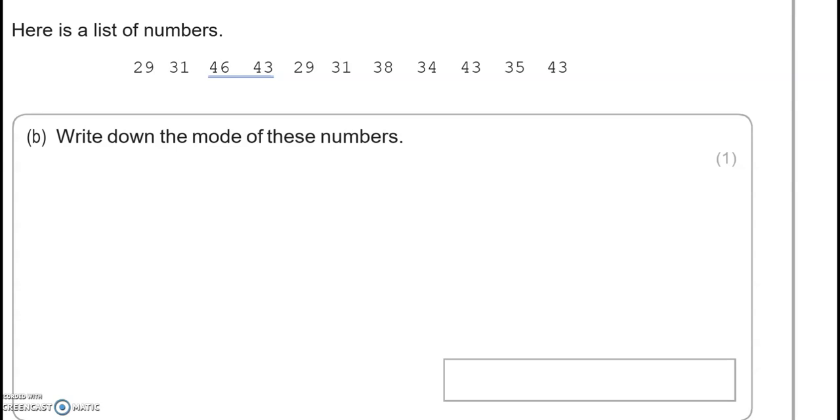The mode is the most common number. I can see 29 repeating itself. Then 31 as well. 46 doesn't repeat itself. 43 does. And then 38 doesn't, 34 doesn't and 35 doesn't. So the number that repeats itself mostly is 43, because we've got 3 lots of it. So 43 is the mode of these numbers.